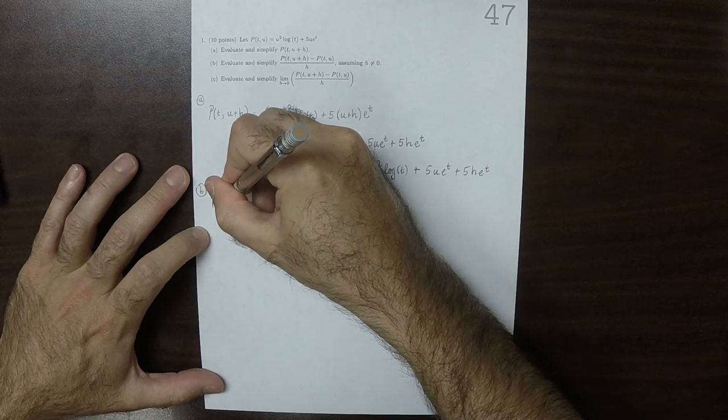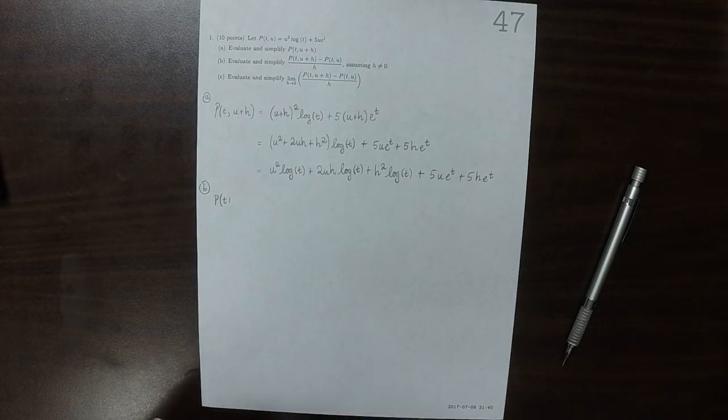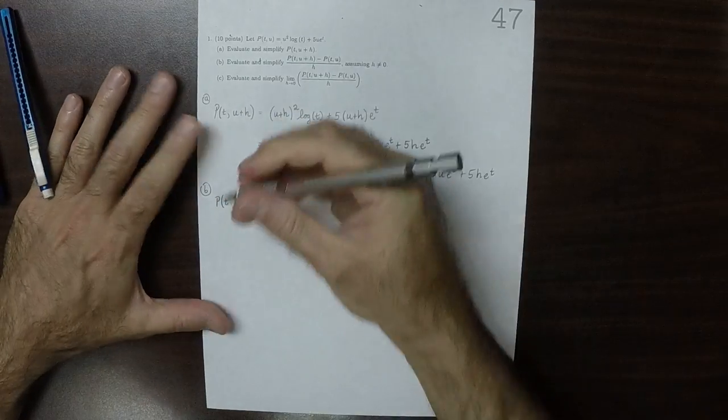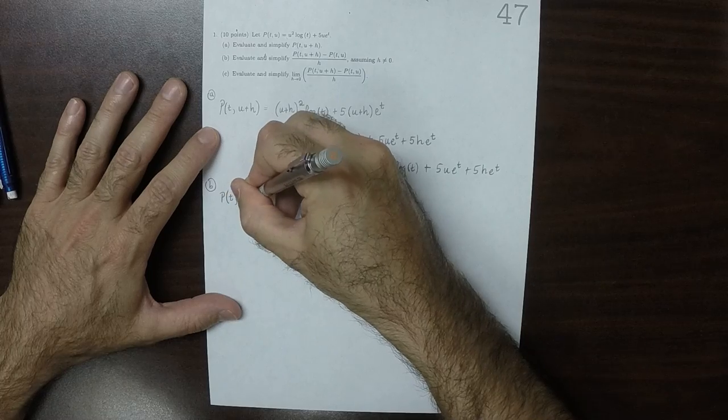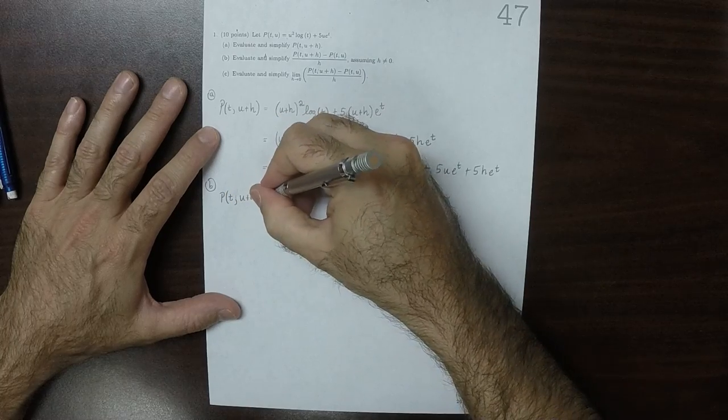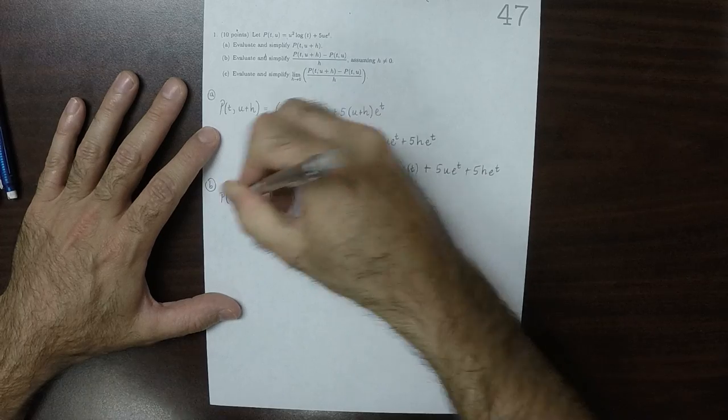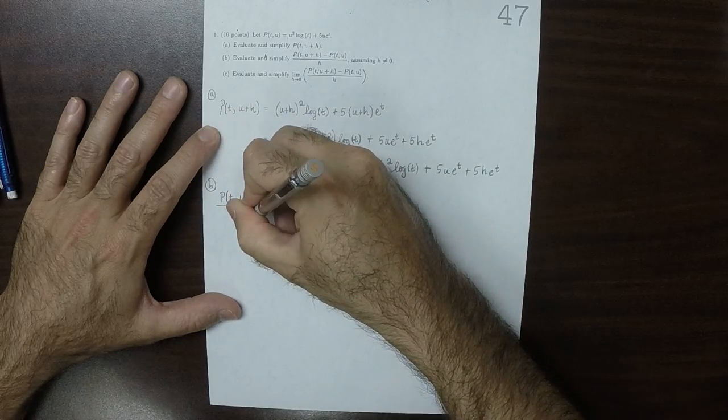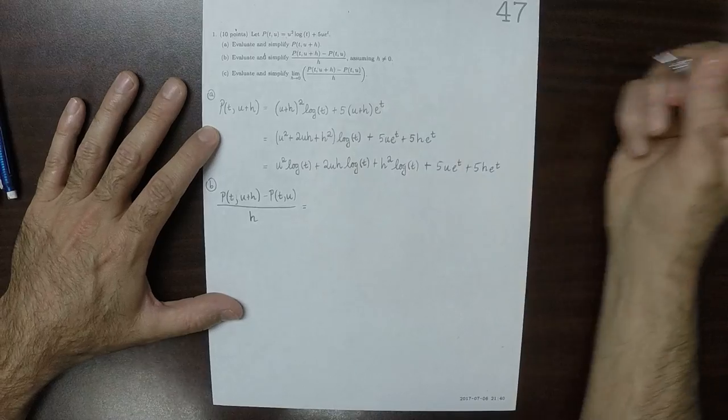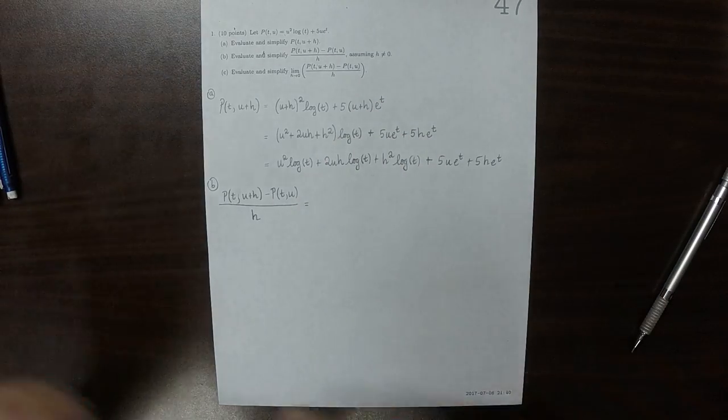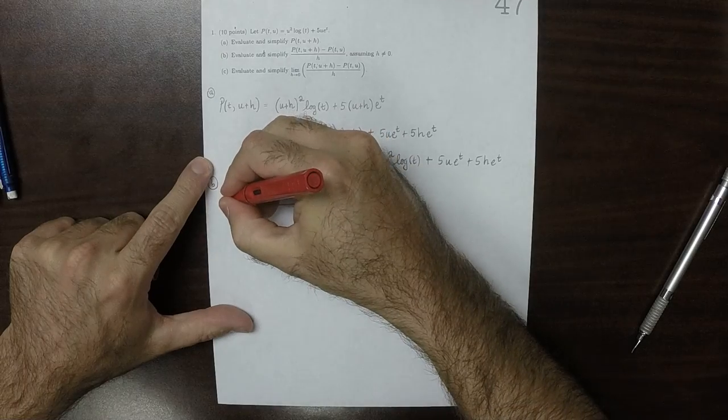P of t comma u plus h minus P of t, u over h. So all of that, we'll put these in red parentheses.